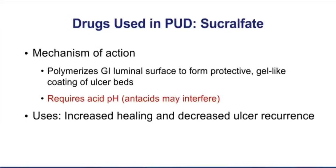The drug sucralfate is used because it has an ability to coat the surface of the ulcer, protect from further damage, and allow for healing. An interesting property of sucralfate that could show up in a test question: the drug requires an acid pH in order to work. If you take sucralfate with any of our other peptic ulcer medications — antacids, proton pump inhibitors, H2 blockers — all of those drugs are going to increase the pH of the stomach and make sucralfate much less effective. So the real problem with this drug is you can't take it with other medications, and it's not that popular a choice today.